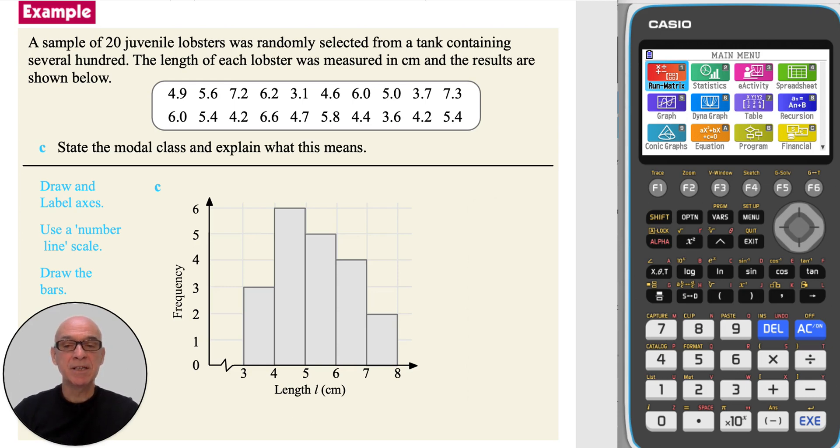In part C, we're asked to state the modal class and to explain what this means. The modal class is the 4 to 5 cm interval. And it means that more lobsters have lengths in this interval than in any other interval of length.